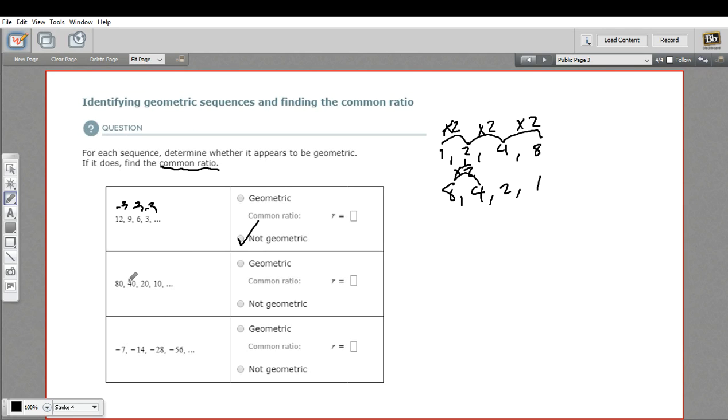Let's look at this next one. 80 to 40, 40 to 20, 20 to 10. Aha! So this one does appear to be geometric. We're dividing by 2 each time. And as I mentioned before, that's the same as multiplying by 1 half. So every step, we're dividing by 2 or multiplying by 1 half. That's definitely geometric. And r, then, is going to be 1 half.